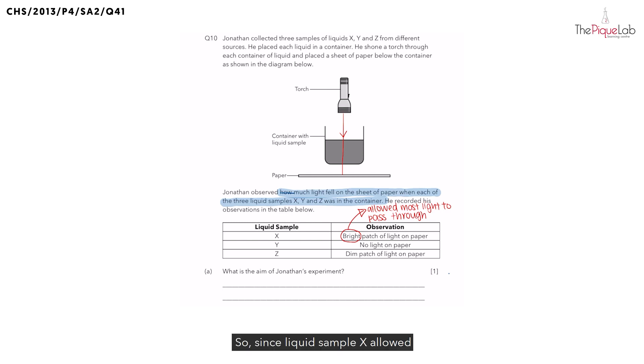So since liquid sample X allowed the most light to pass through out of all the other liquids, what can we conclude about liquid sample X? Is it the clearest or is it the muddiest liquid sample? It is the clearest. So I'll put a bracket, liquid sample X is the clearest.